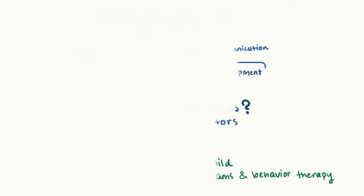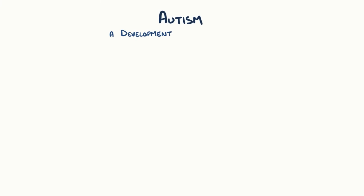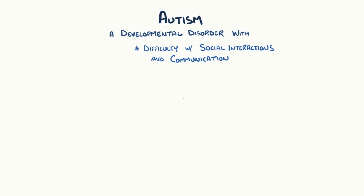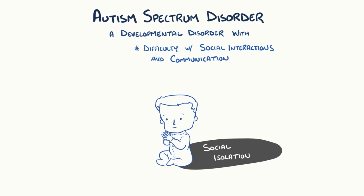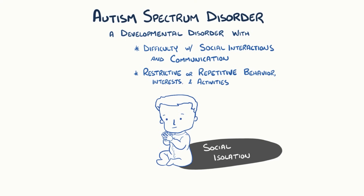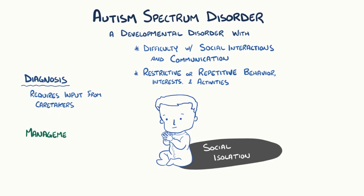As a quick recap: autism is a developmental disorder where an individual has difficulty with social interactions and communication, often leaving them socially isolated. The disorder is along a spectrum of communication and interaction deficits, as well as restrictive or repetitive behavior, interests, and activities. A diagnosis of autism spectrum disorder requires significant input from caretakers, and management of the disease is highly individualized.